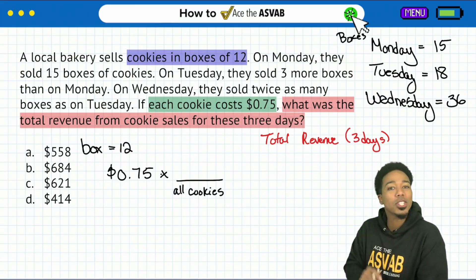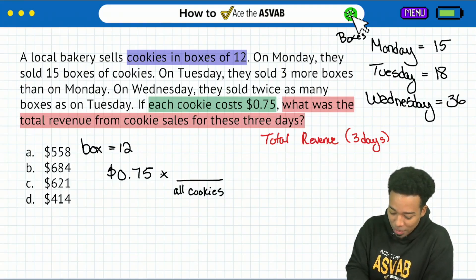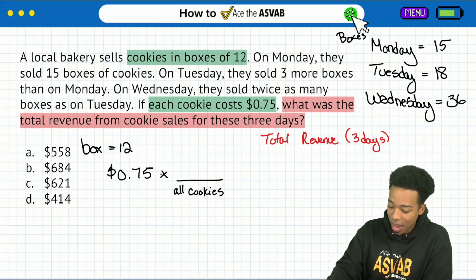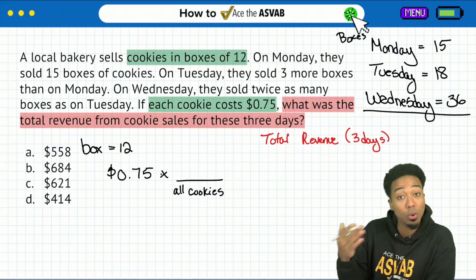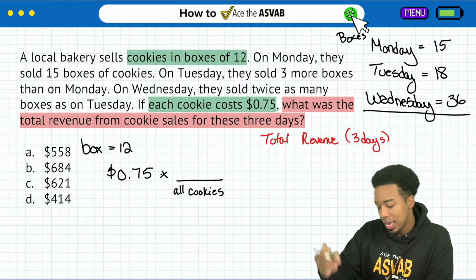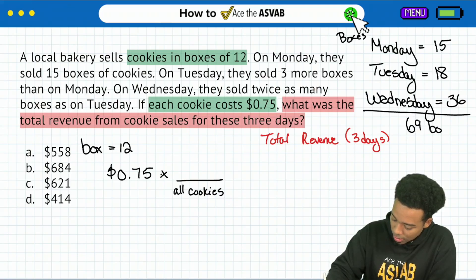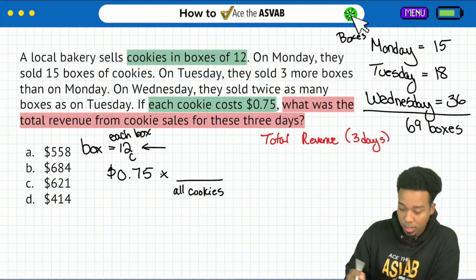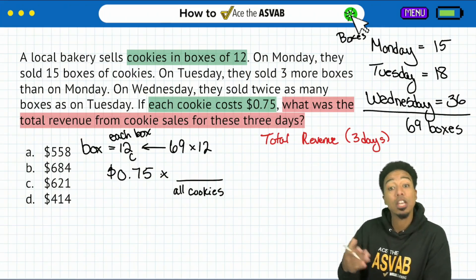75 cents multiplied by all cookies. Now the only question is how do we find all the cookies? Each box comes in a pack of 12. So we have everything we need — 15 on Monday, 18 on Tuesday, 36 on Wednesday. If we add that together we'll get the total number of boxes. 15 plus 18 is 33, then 33 plus 36 is 69. So we have 69 boxes, and we know that each box is 12 cookies.